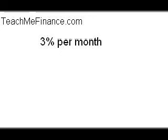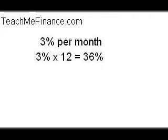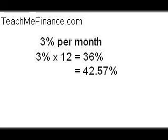Let's say I give you a credit card and the interest rate on the card is 3% per month. What is the annual rate that you're actually going to be charged? You might multiply 3% per month times 12 months and come up with 36%. But actually, the effective annual rate is 42.57%.